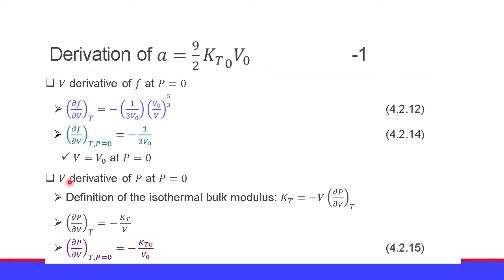Next, we evaluate the volume derivative of pressure at P = 0. The definition of KT0 is KT0 equals minus V times the partial derivative of pressure with respect to volume at constant T. From this definition, the partial derivative of pressure with respect to V at constant T equals minus KT0 over V. At pressure P = 0, this becomes minus KT0 over V0. Equation 4.2.15.